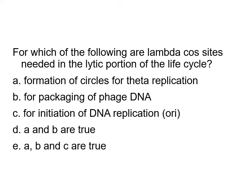Quiz question: Which of the following are lambda cos sites needed for in the lytic portion of the life cycle? A) Formation of circles for theta replication, B) Packaging of DNA, C) Initiation of DNA replication, D) A and B, or E) A, B, and C. The answer is D — A and B are true. Cos sites are needed for formation of circles and also for packaging of phage DNA. They do not serve as the replication origin.